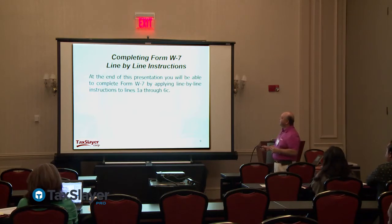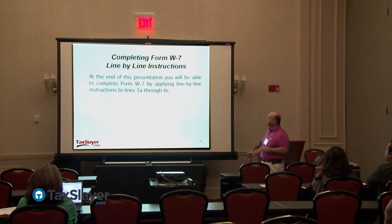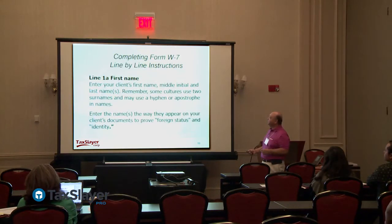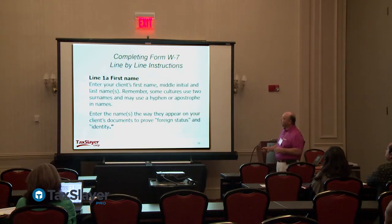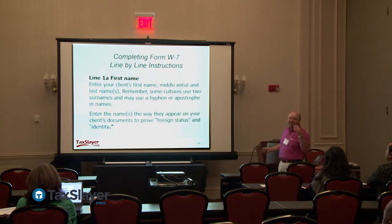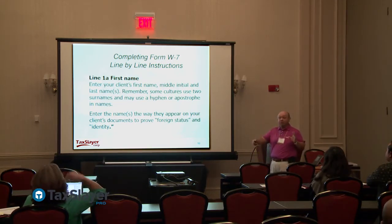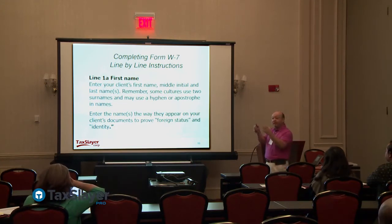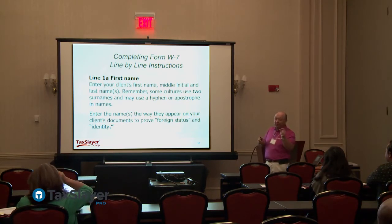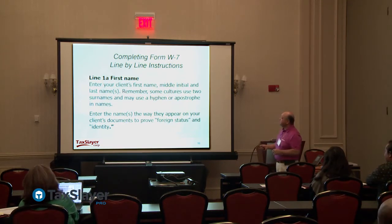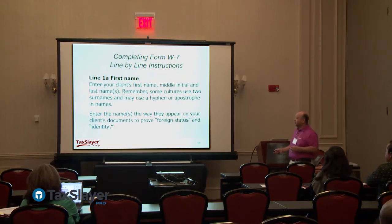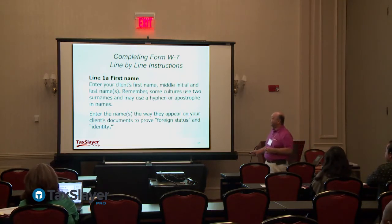By the end of the presentation you should be able to complete the W-7, lines one through six. Now a breakdown of the lines: line 1 is pretty self-explanatory — your client's first name, middle initial, and last name. Remember the two surnames — Garcia Sanchez, Sanchez Garcia, de Maria — so you have to determine based on prior tax returns what they've normally filed. Enter the name as it appears on the documents that prove foreign status and identity.